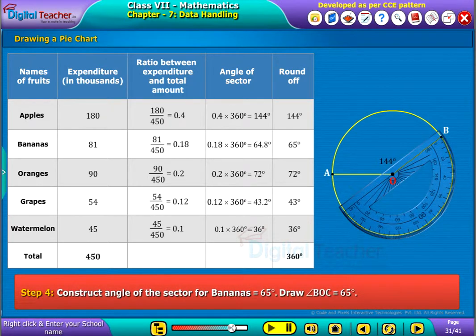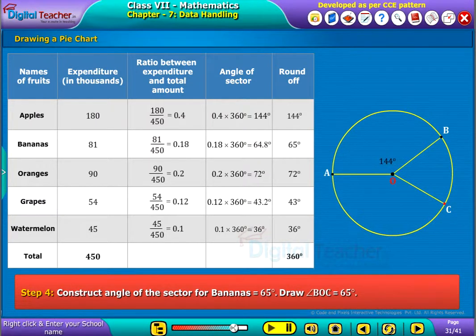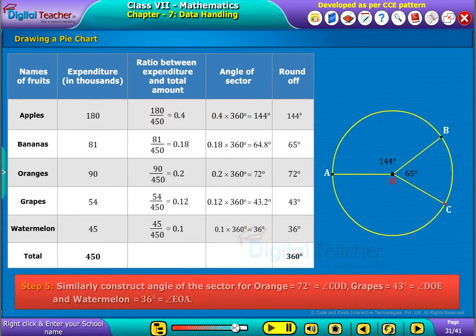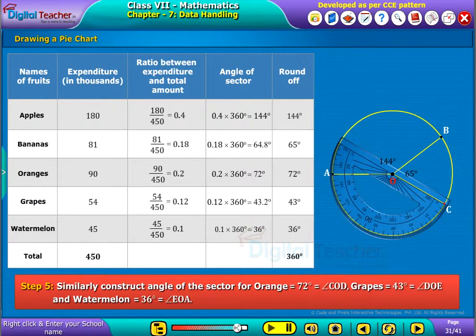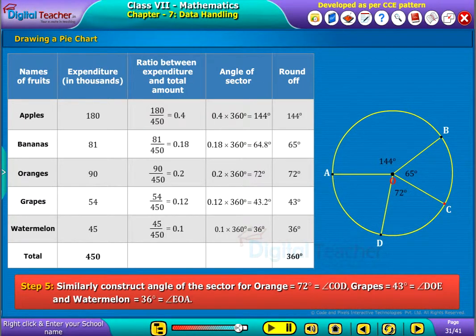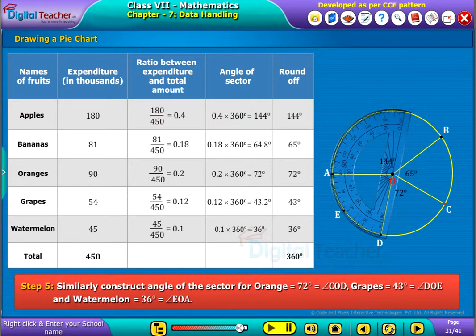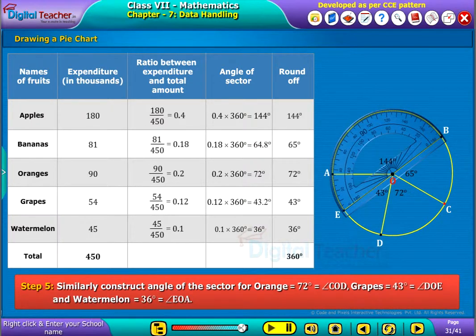Step 4: Construct the angle of the sector for bananas equal to 65 degrees — draw angle BOC equal to 65 degrees. Step 5: Similarly, construct the angle of the sector for orange equal to 72 degrees, which is angle COD; grapes equal to 43 degrees, that is angle DOE; and watermelon 36 degrees, that is angle EOA.